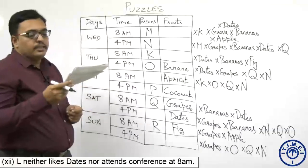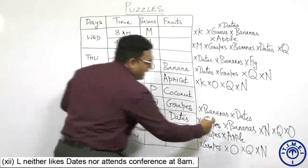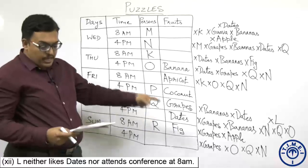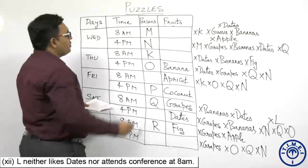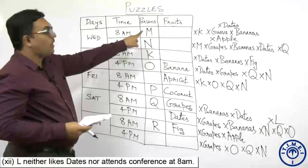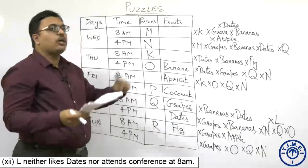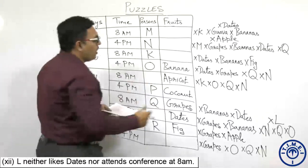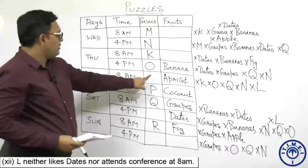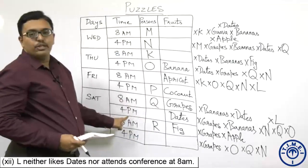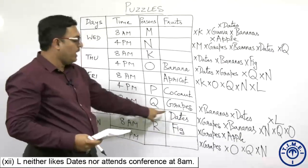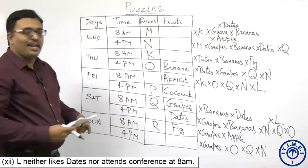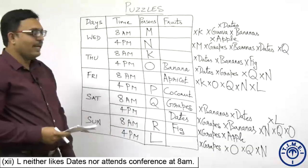L neither likes dates nor attends conferences at 8AM. Since all 8AM slots are filled and L cannot have dates, and the dates cell is at Saturday 4PM, L is ruled out from all filled positions. The only remaining position for L is Sunday 4PM.